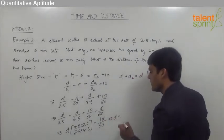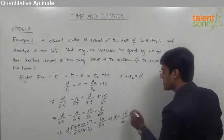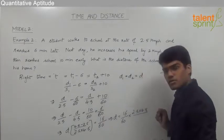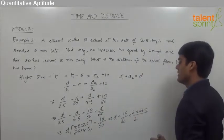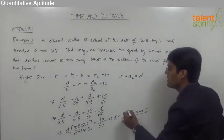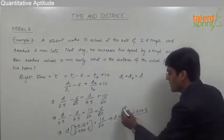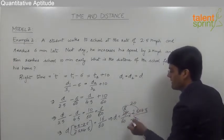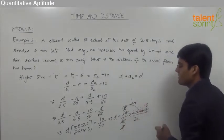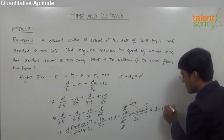So d equals (16 by 60) times (2.5 times 4.5) divided by (4.5 minus 2.5), which is 2. Simplifying: 2 goes 8 times into 16; 8 into 2.5 equals 20; 20 divided by 60 gives 1.5. So the distance between the home and the school is 1.5 kilometers.